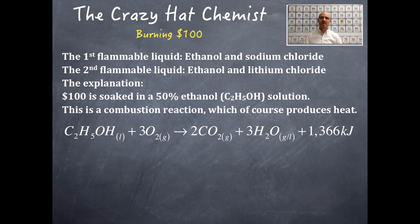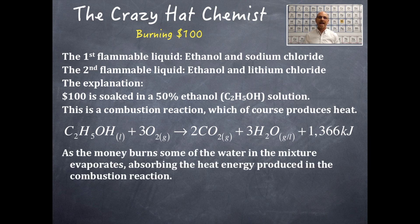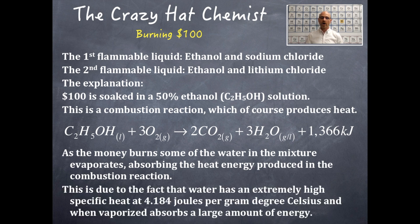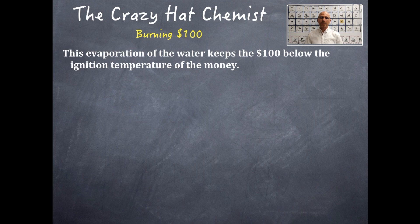How much heat? 1,366 kilojoules of energy. As the money burns, some of the water in the ethanol water mixture, it's a 50% solution remember, some of that water evaporates, meaning it's vaporized. That water absorbs the heat energy produced in this combustion reaction. That is absolutely necessary. This is due to the fact that water has an extremely high specific heat at 4.184 joules per gram degrees Celsius. And when vaporized, it absorbs all that energy that this combustion reaction produces. Therefore, that's why the $100 does not burn. However, this evaporation of the water keeps the $100 below the ignition temperature of the money.